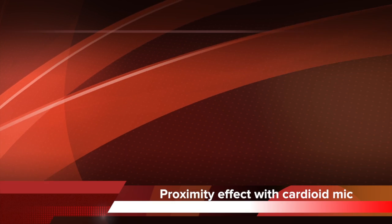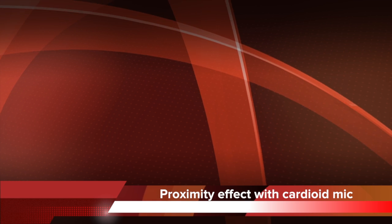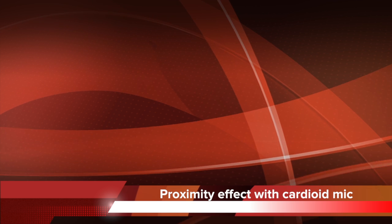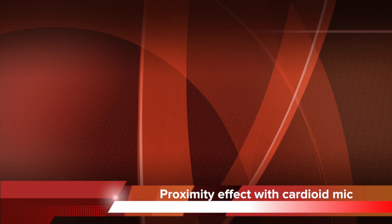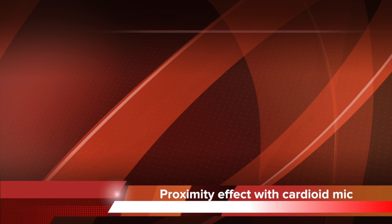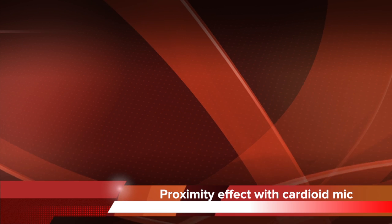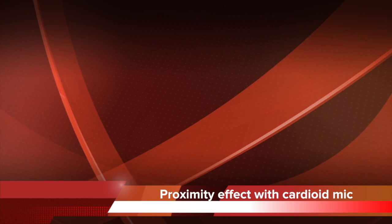Using an ElectraVoice 635A omnidirectional microphone, notice that whether held very close to the mouth or further away, the bass response should be about the same with this type of microphone. Now switching to a Shure SM58 cardioid microphone held very close to the mouth — you should hear a pronounced emphasis on the bass at this close distance. As it moves away and you talk louder, it's obviously quieter due to distance, but you should also notice a lot less bass emphasis because the proximity effect is reduced at greater distance.